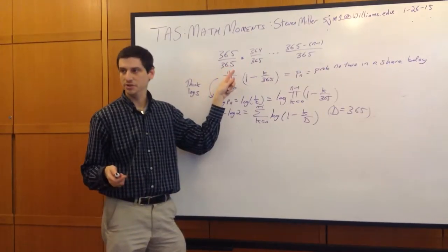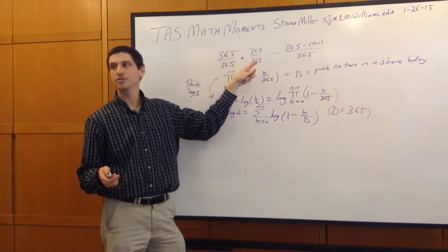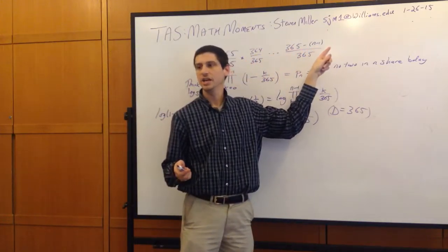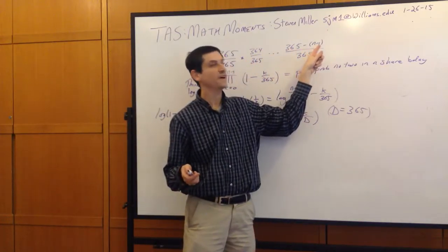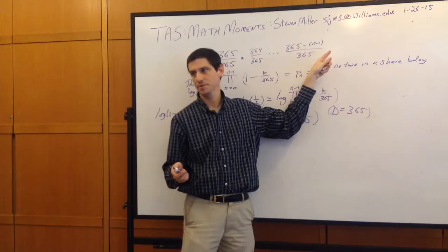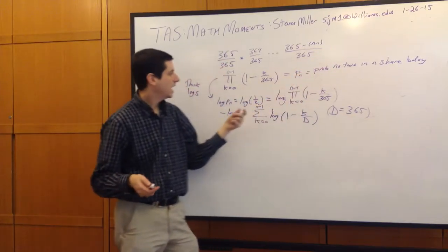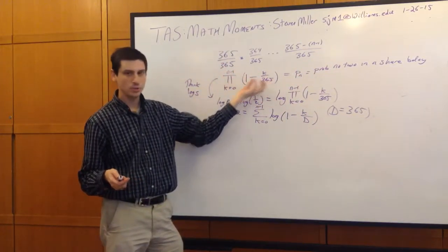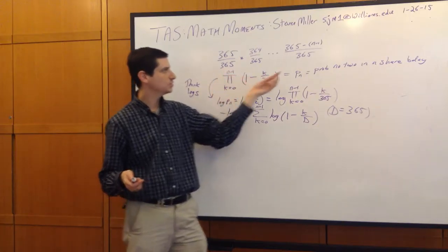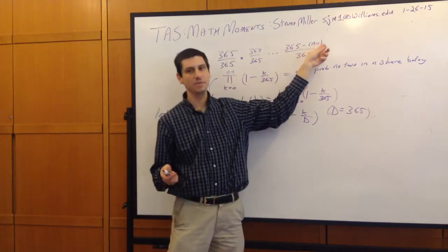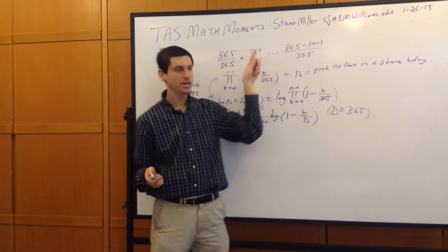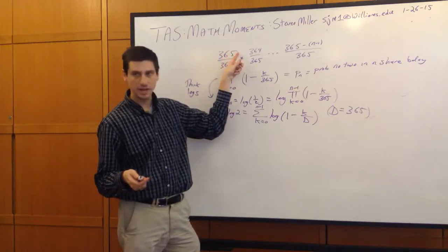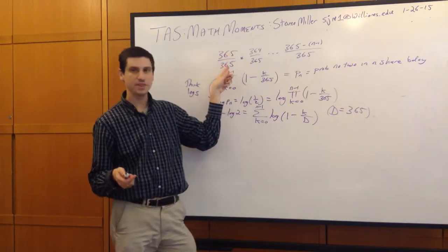The first person can have any birthday. The second person can only have 364 possibilities. All the way down to the nth person, who can have 365 minus (n minus 1) possibilities. This is written compactly as a product where k goes from 0 to n minus 1: the product of (365 minus k) divided by 365.